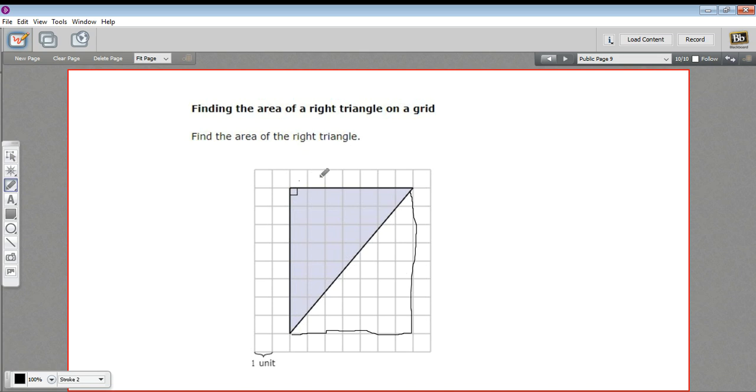It's one, two, three, four, five, six, seven units on this side, and one, two, three, four, five, six, seven, eight units on this side. So this rectangle is seven by eight.